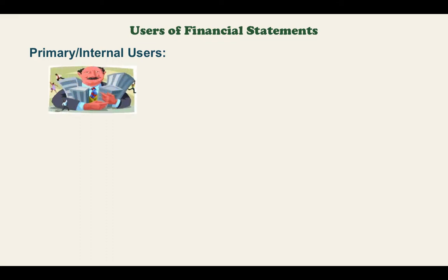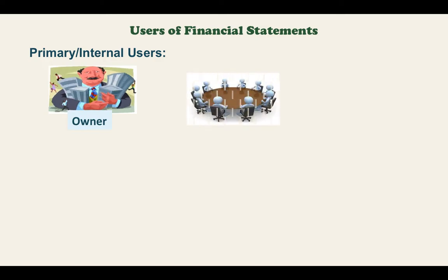Now we are going to discuss the users of financial statements — who uses them. We are going to categorize this into two: the primary or internal users, and the secondary or external users. The first internal user interested in the financial statement is the owner, because the owner wants to know whether the business is doing good and whether the business is earning profit.